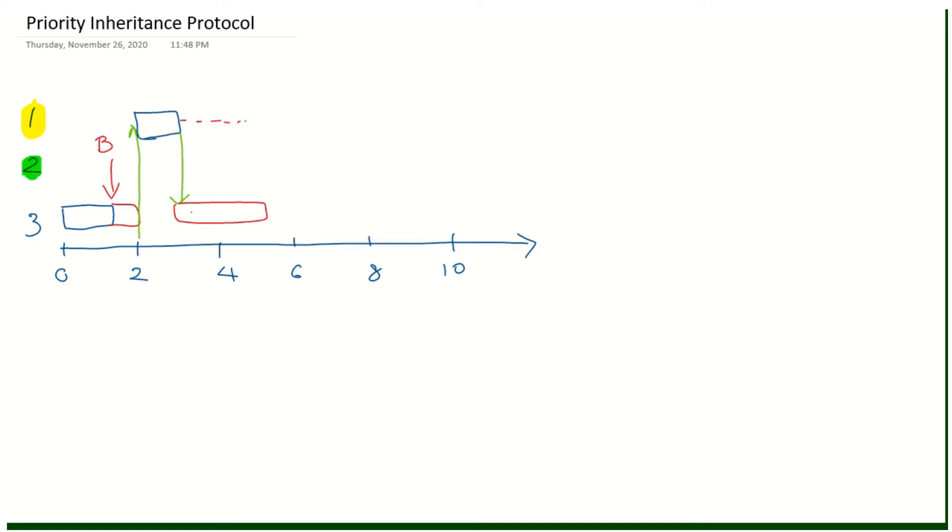here: task 3 takes priority 1 because it came from task 1 to task 3. So task 1 is a high priority task, so it inherits task 1's priority to task 3 here.